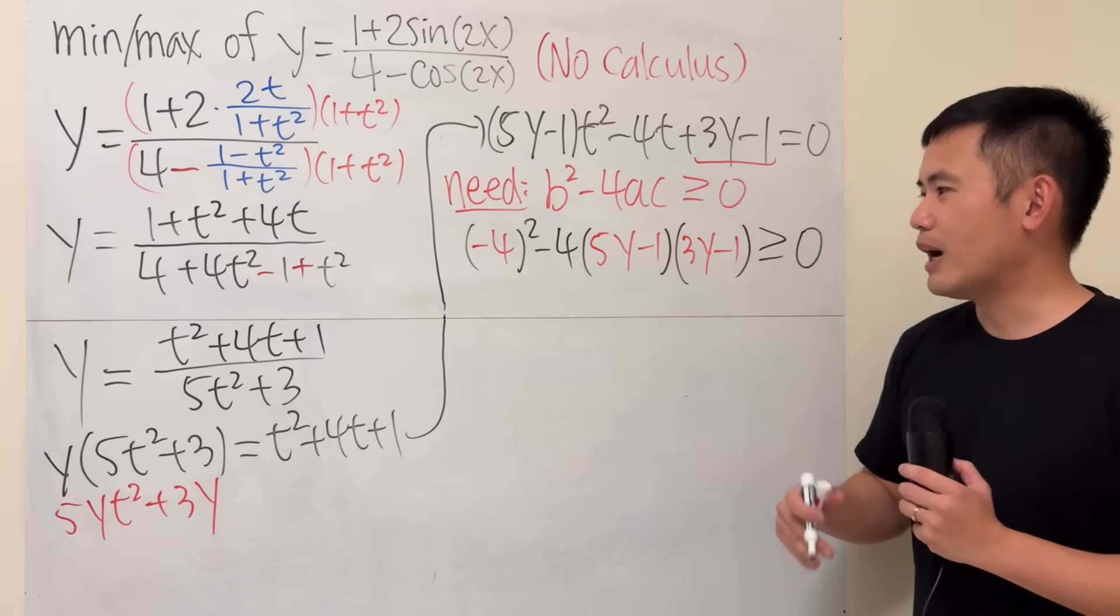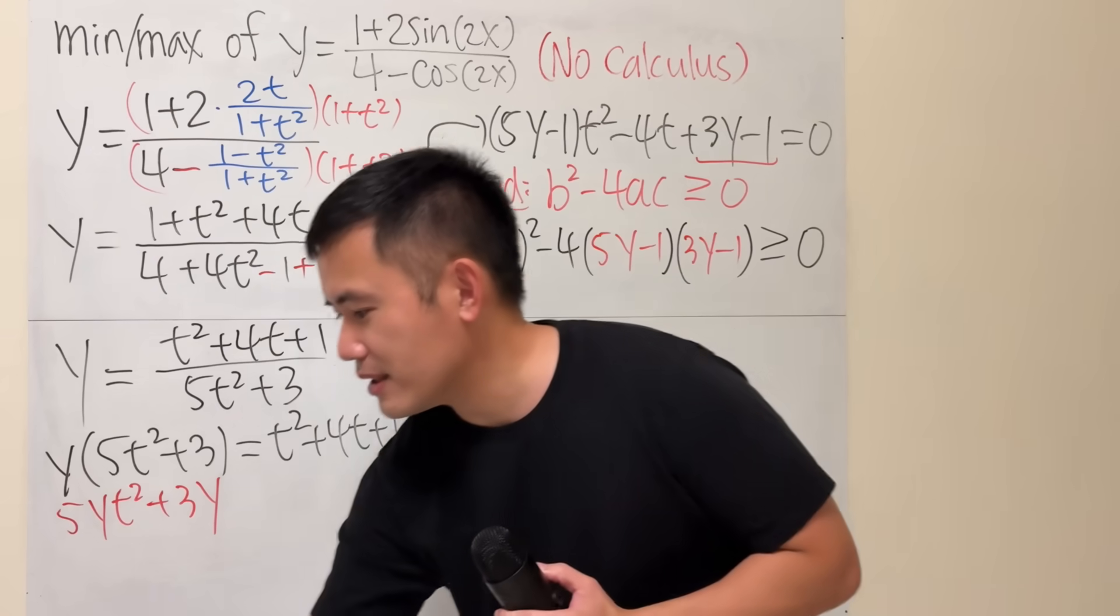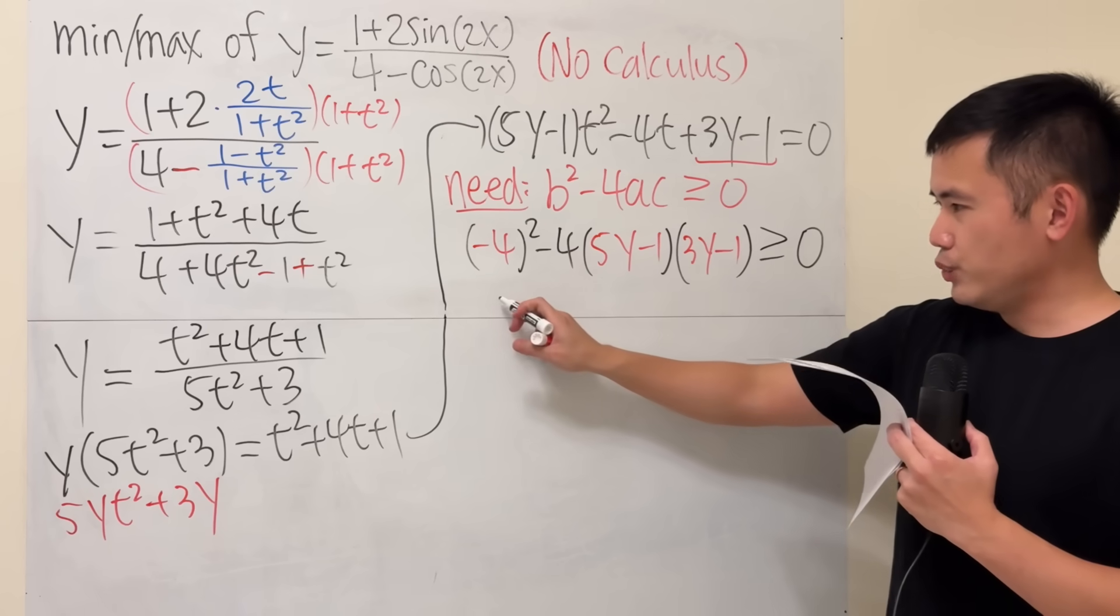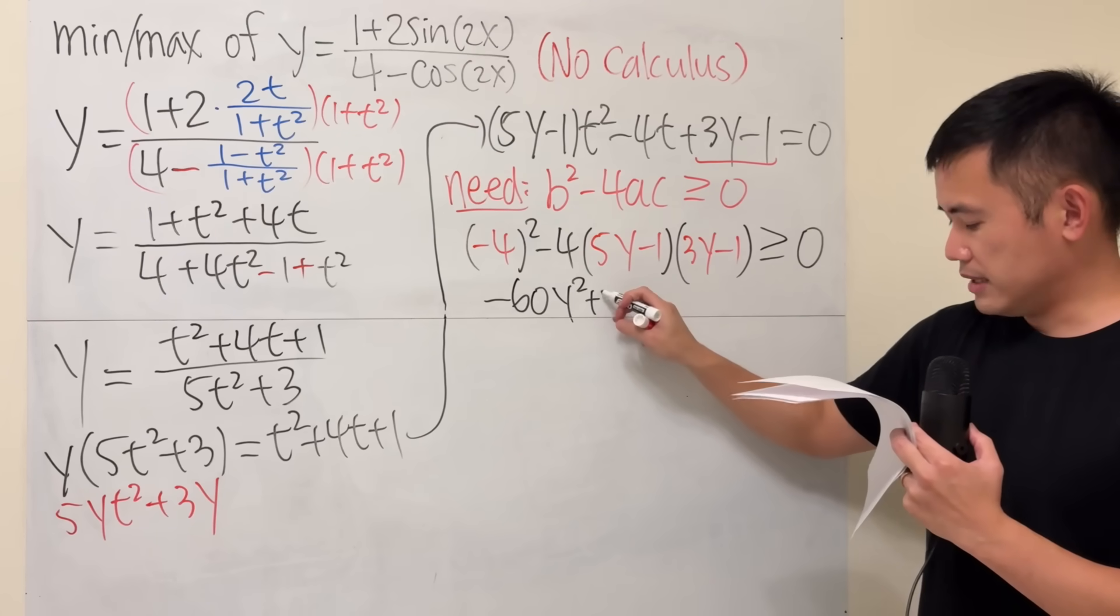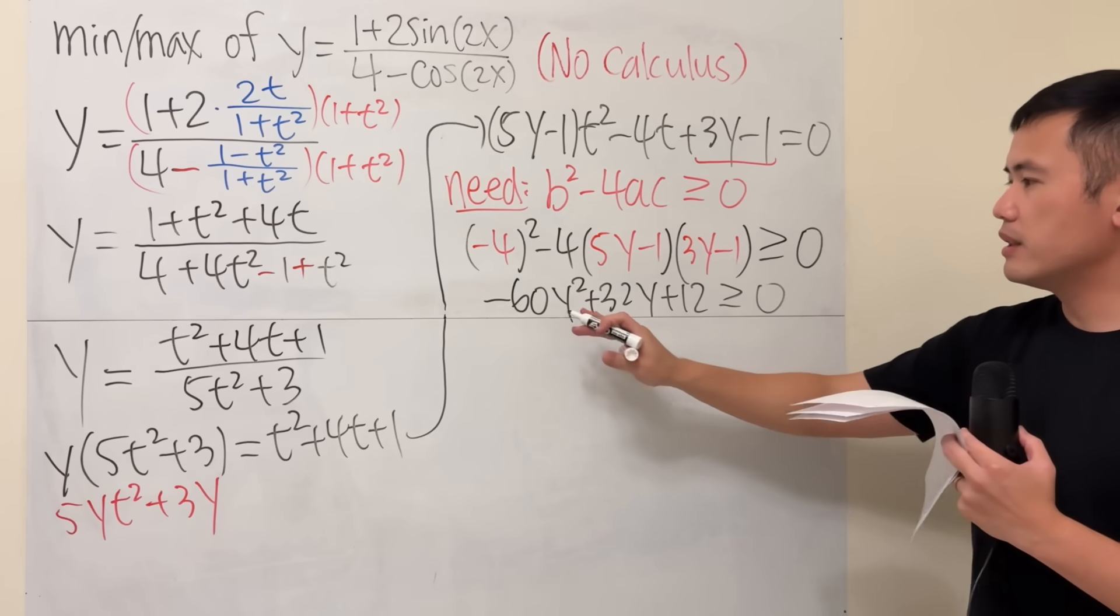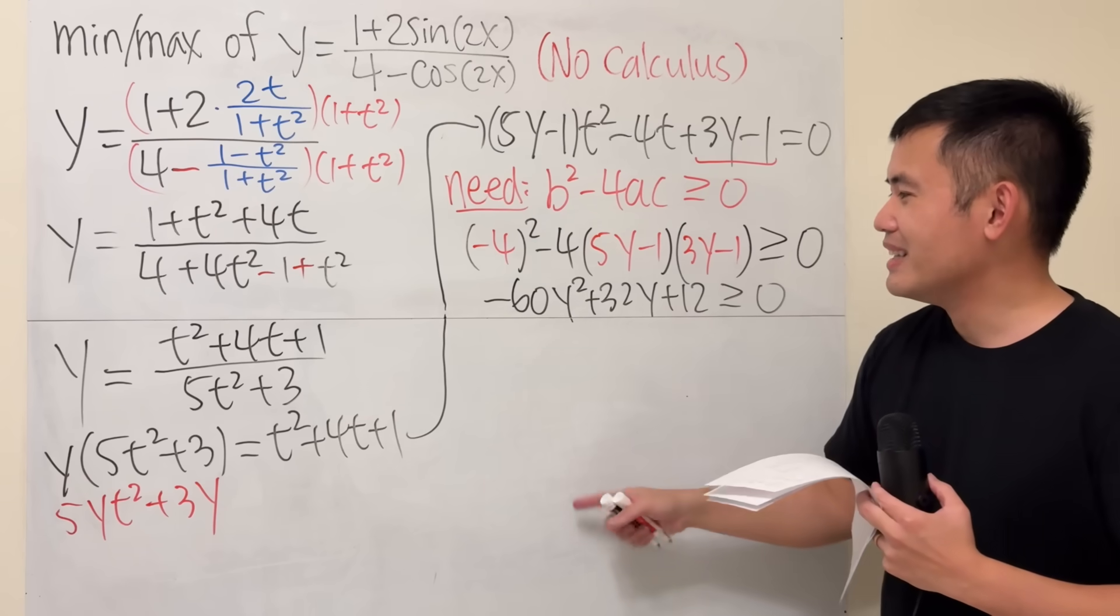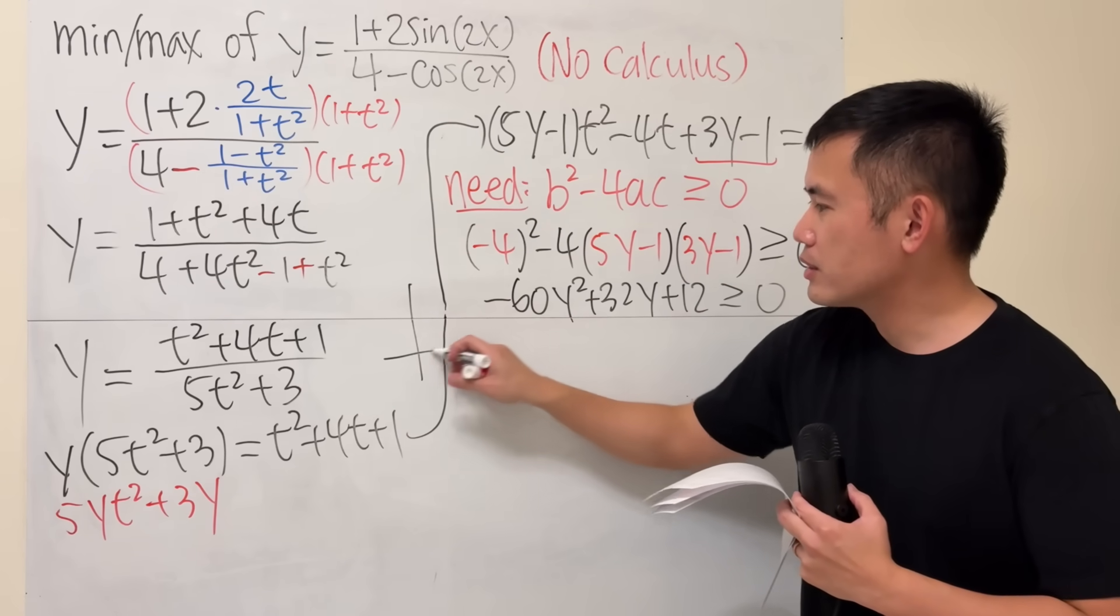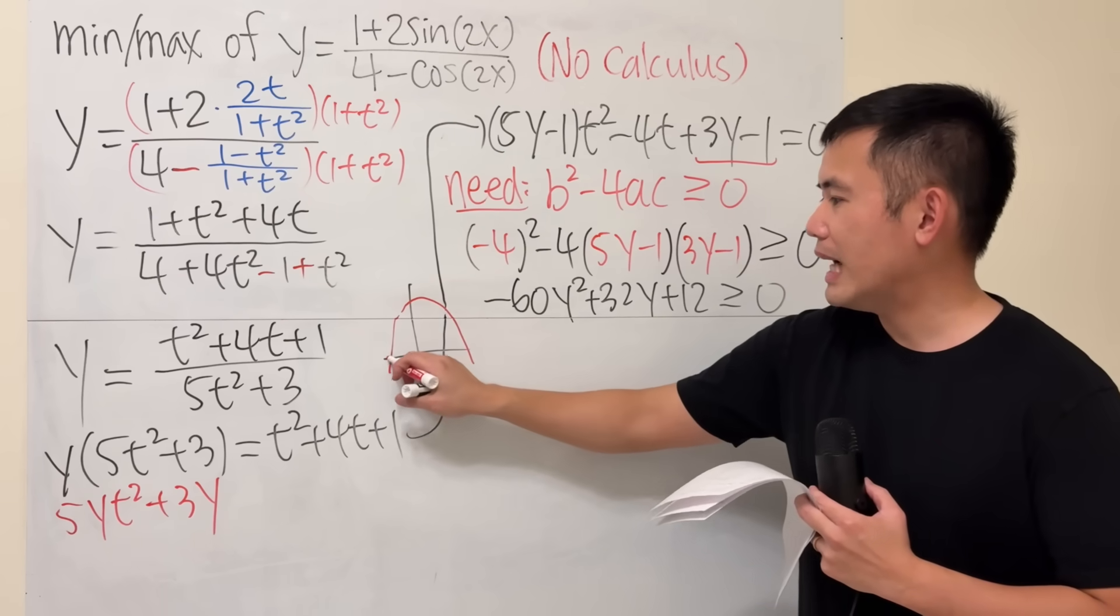Now, for the rest, it's just algebra in terms of quadratic and all that. So, I'm just going to be telling you guys the answers for the rest of the computations. Right here, if you work them out, you end up with negative 60y squared plus 32y plus 12. And you have to make sure this is greater than or equal to 0. This is also quadratic, right? And notice that the coefficient right here is negative, so you know it's going to be an open-down parabola like this.